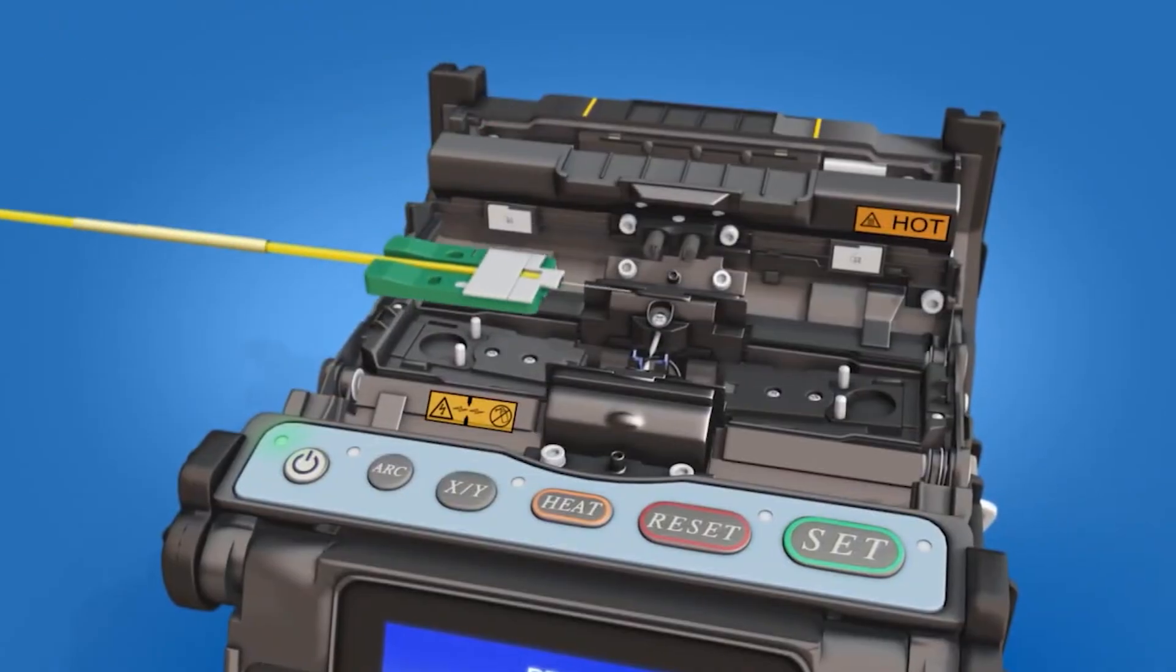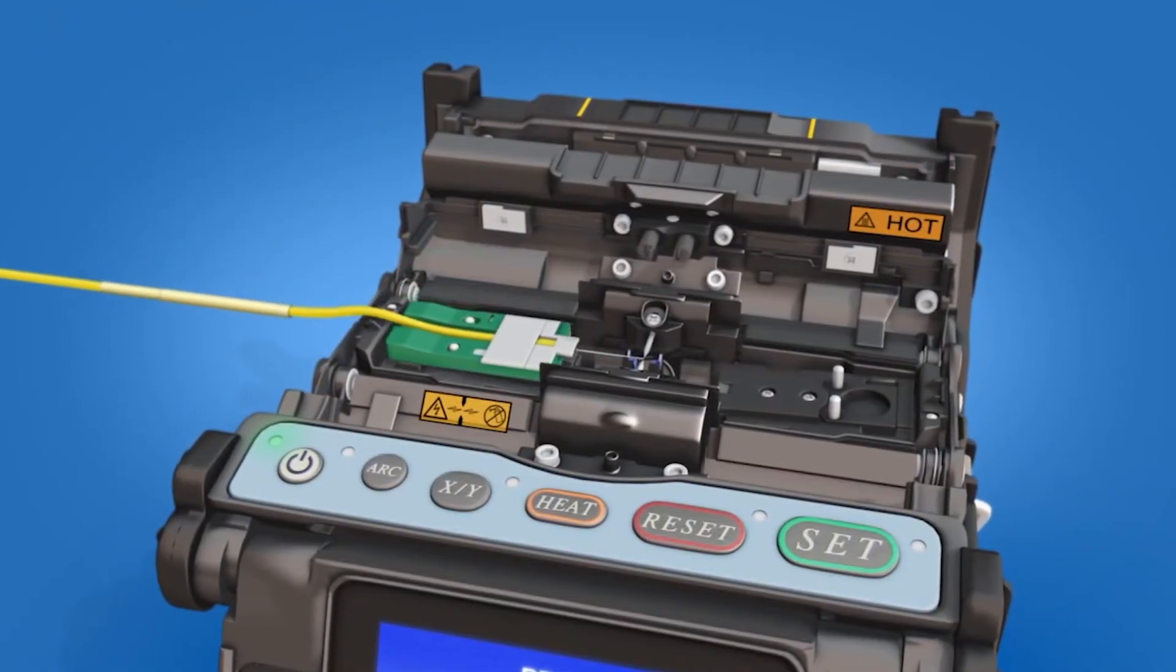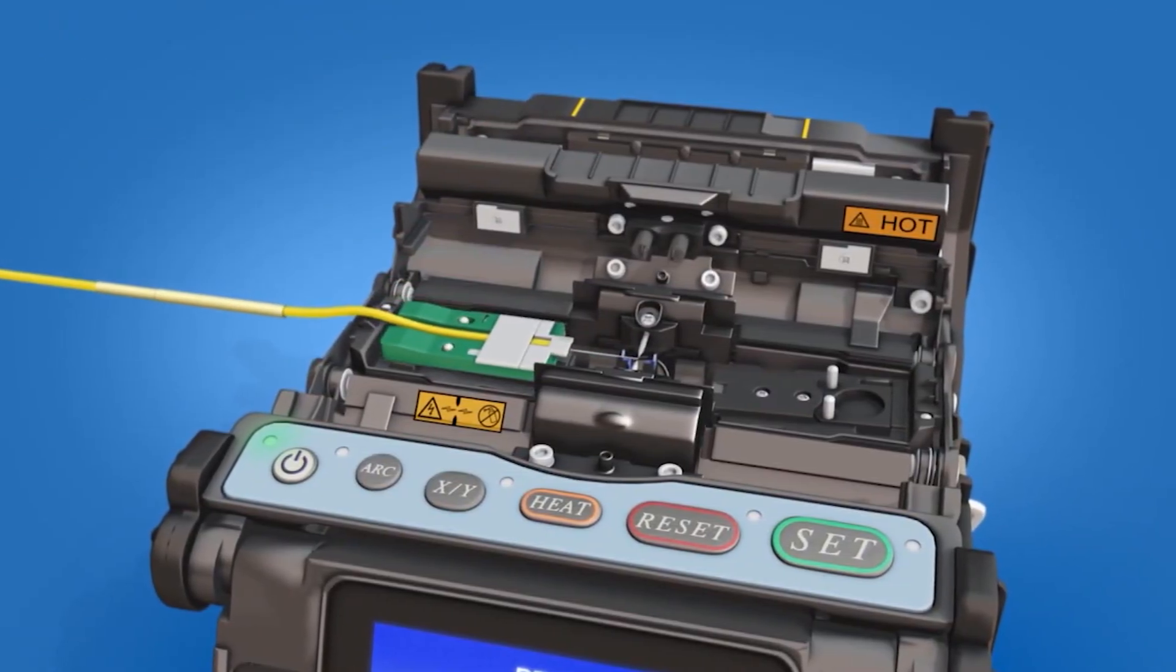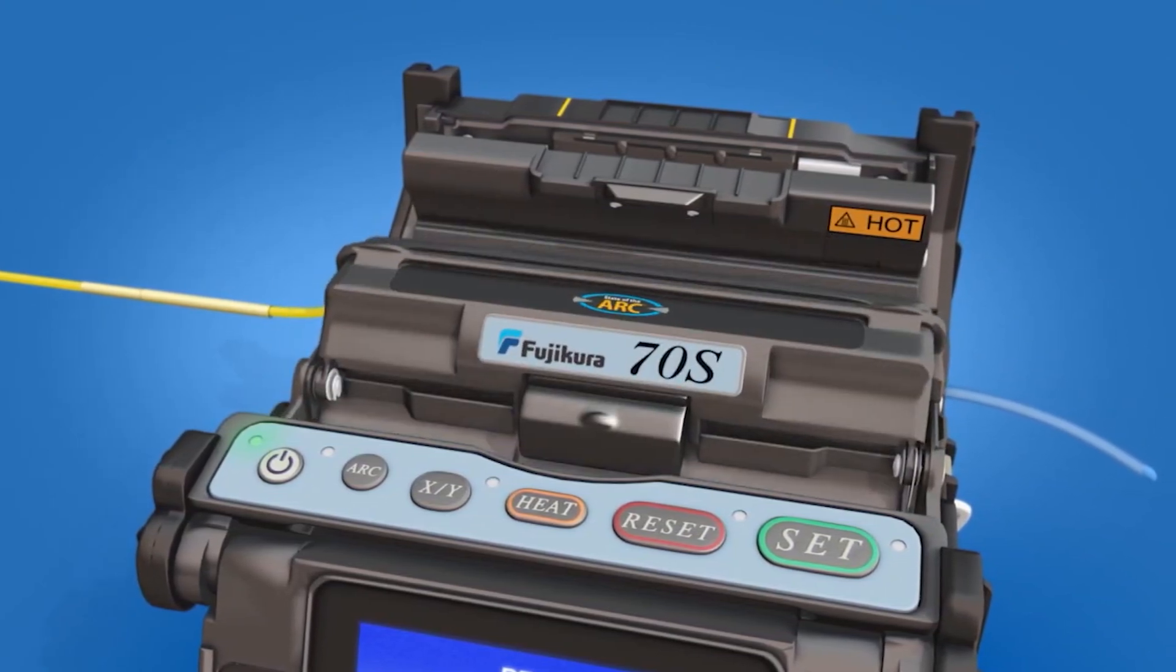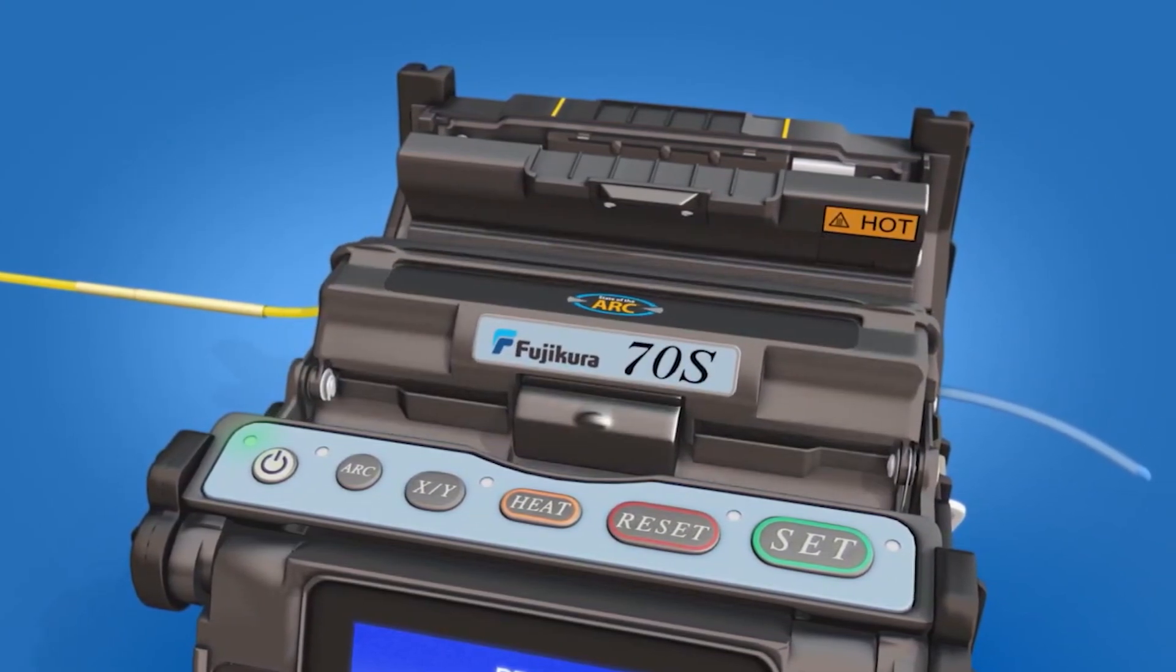Load the fiber holder into the left side of the fusion splicer. Load the ferrule unit into the right side of the fusion splicer and close the wind protector. Splice the fiber to the fuse connect connector.